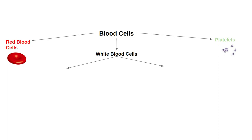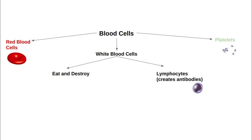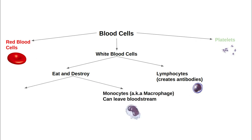The white blood cells section is where the main portion of our flow chart takes off — leave space for a couple more branches. We have lymphocytes, whose job is to create antibodies. White blood cells also have an eating-and-destroying function, broken down into two categories: monocytes, also called macrophages, which can physically leave the bloodstream and move around the body, or granulocytes, which stay in the blood and are broken down into three more distinct types.